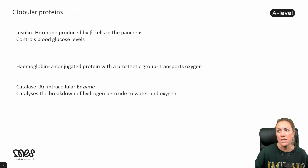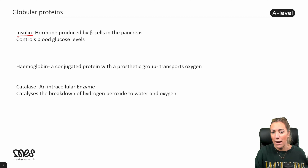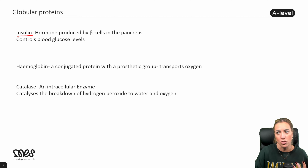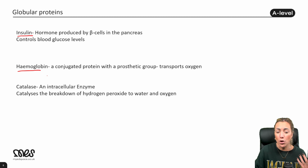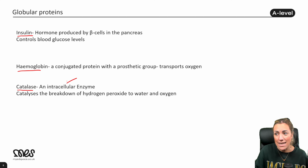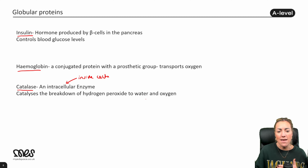For globular proteins — which have a more spherical shape — OCR requires you to know insulin, which is produced by the beta cells in the pancreas and controls blood glucose. Hemoglobin, which we've already said is a conjugated protein with a prosthetic group, is also an example of a globular protein you need to know for OCR. And catalase, another globular protein, is an intracellular enzyme that catalyzes the breakdown of hydrogen peroxide into safe products — water and oxygen. So you've got a list of protein examples to learn if you're doing OCR.